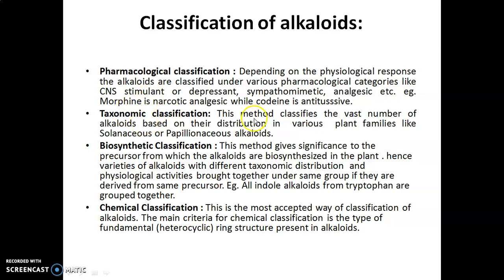Taxonomically, we can classify the vast number of alkaloids based on their distribution in various plant families — for example, solanaceous family plants contain tropane alkaloids. Biosynthetic classification gives significance to the precursor from which the alkaloids are derived. Alkaloids are basically derived from amino acids, so depending upon the nature of the amino acid, they are grouped together. For example, all indole alkaloids derived from tryptophan are grouped together.